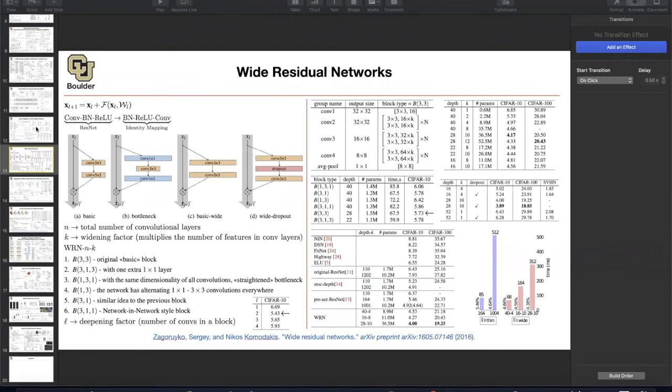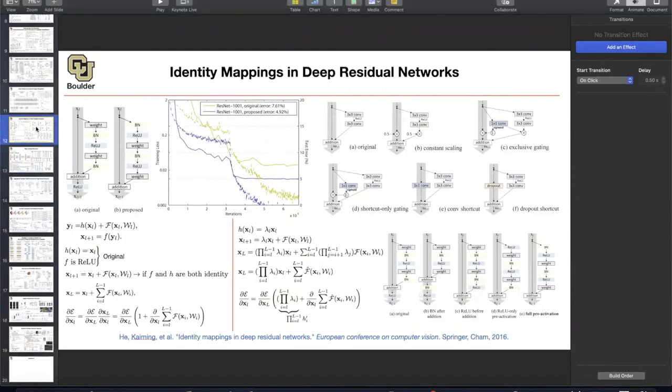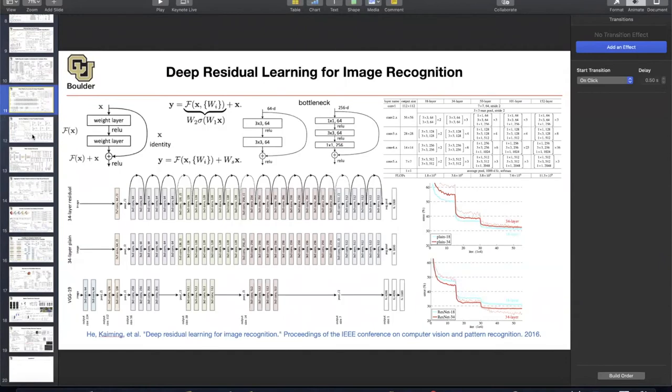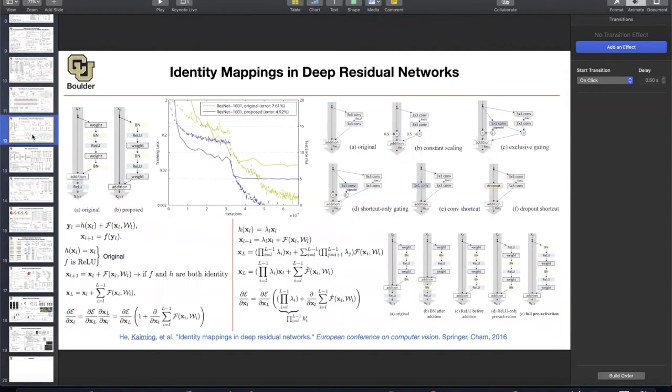So what did we do last session? We learned about ResNets. We learned how to make them more efficient and go even deeper by arranging batch norm, ReLU, and weights properly, having no non-linearity or linear operations on the main branch, on the shortcut branch.